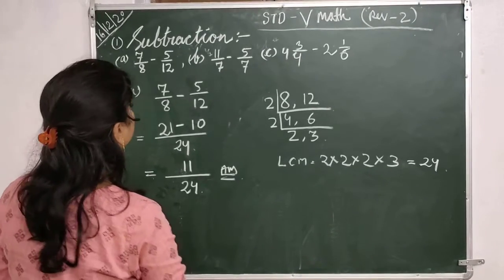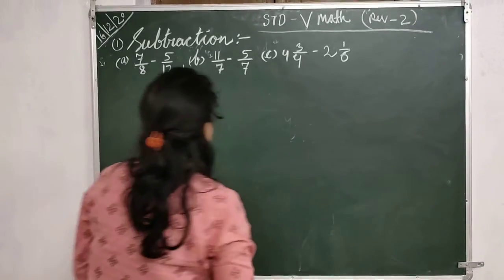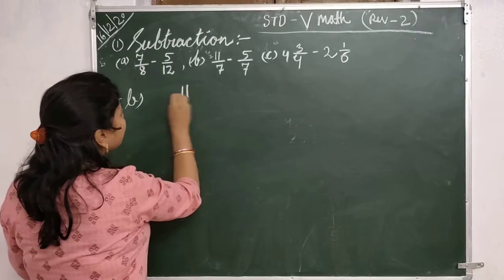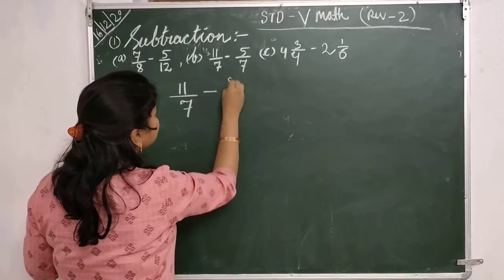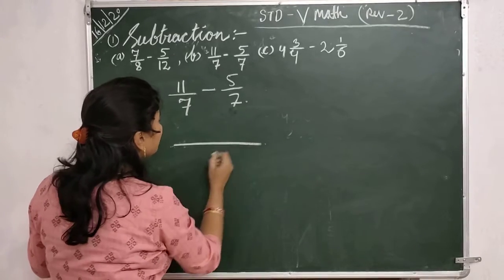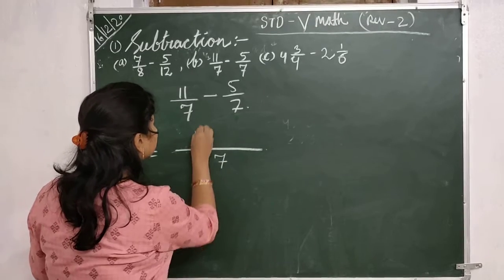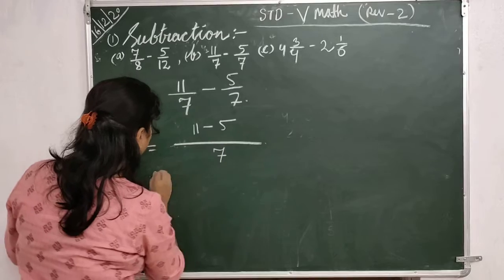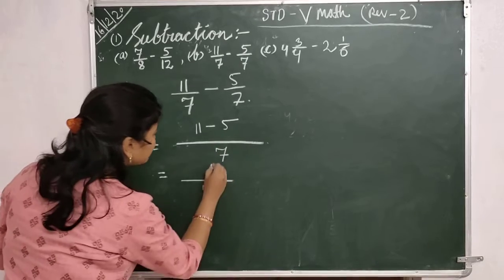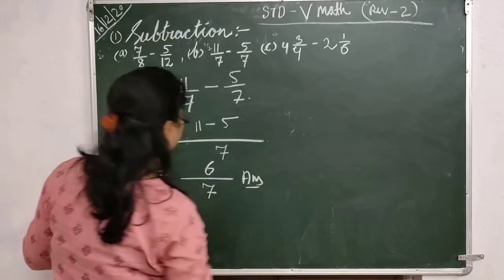The next question is very simple. The question is 11 by 7 minus 5 by 7. Here the denominators are both 7, so simply write the same denominator 7. Then subtract 11 minus 5. Your answer is 6 by 7.